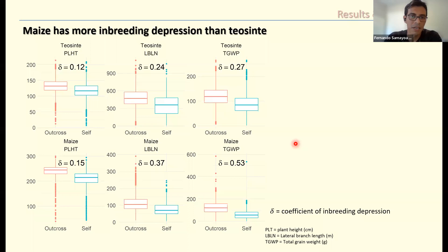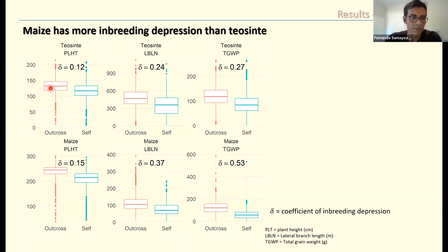This is the first analysis we did to compare inbreeding depression in maize and teosinte. The big message here is that maize has more inbreeding depression than teosinte. In the graph, the top panels are for teosinte and the bottom panels are for maize, shown for three representative traits that show the same pattern across all traits. The orange boxes represent the distribution of traits across outcross families, and the green boxes across self families. Delta is the coefficient of inbreeding depression. We can see that maize is more susceptible to even a single event of selfing, meaning there is more inbreeding depression in maize than teosinte.